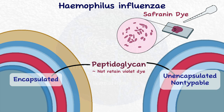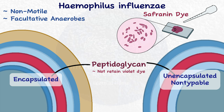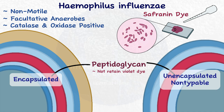Haemophilus influenzae is non-motile, meaning it does not move, and facultatively anaerobic, which means it can live in both aerobic and anaerobic conditions. It is also catalase and oxidase positive, which implies it produces both of these enzymes.